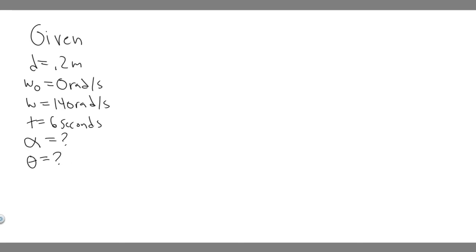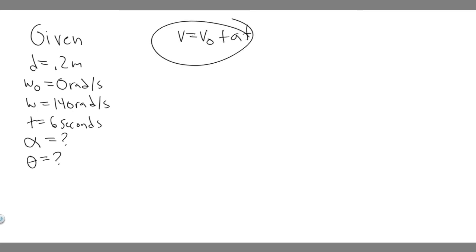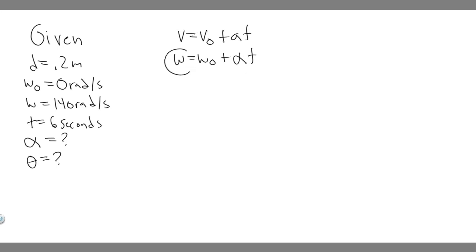They first want us to find the angular acceleration. You want to think about these just like normal kinematic equations, but with rotational variables. The equation to use is: omega equals omega-0 plus alpha times t — the rotational equivalent of v equals v-sub-0 plus a times t. We're given the angular velocity, the initial angular velocity, and the time of 6 seconds, so we can solve for alpha.